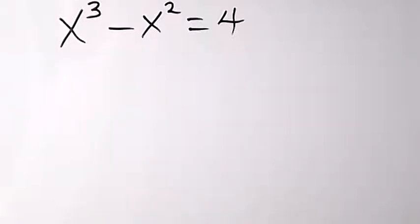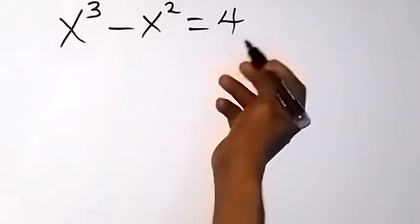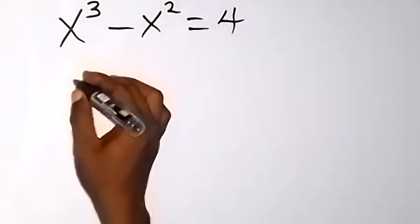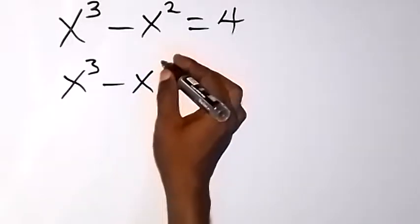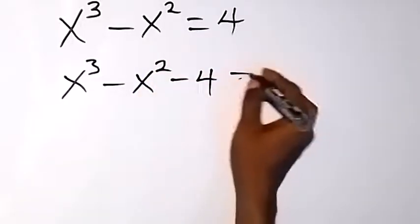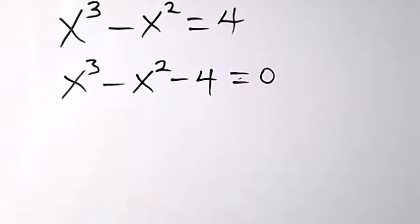Welcome to this class, thank you for joining us. We want to solve this equation — find the value of x in x raised to power 3 minus x squared equals 4. From here, let's take 4 to this side and we have x raised to power 3 minus x raised to power 2 minus 4 equals 0.